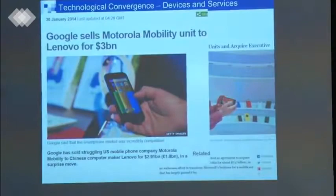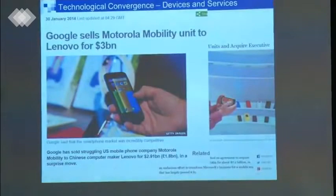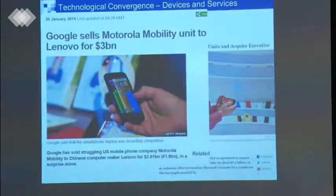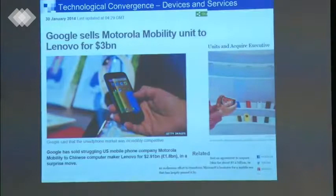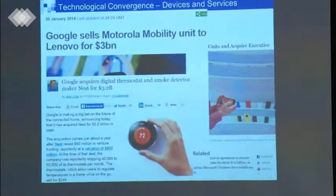It sounds like they were stupid — but what the story does not say is that they did not sell all the IPs. Do you know what IPs are? Intellectual properties — all the patents. They sold the company without all the IPs, because the American government did not allow them to do it. And then Google acquired Nest, a digital thermostat and smoke detector maker, for 3.2 billion dollars.